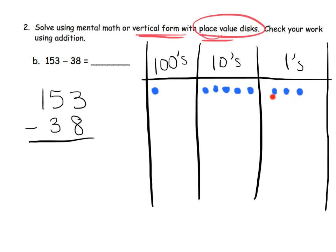Obviously, we don't have enough ones here to take away 8 of them. So we're going to take this 10 right here and unbundle it. That's going to give us 10 dots in the ones column. Now, instead of having 3 dots in the ones column, we now have 13 dots in the ones column. Now we have enough to take away 8, so we're going to cross off 8. We're left with 5 dots left over.